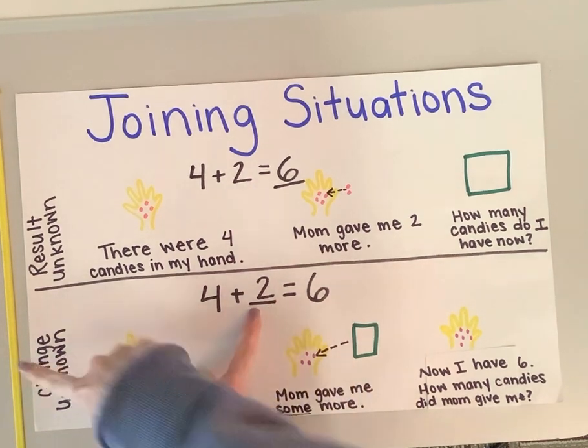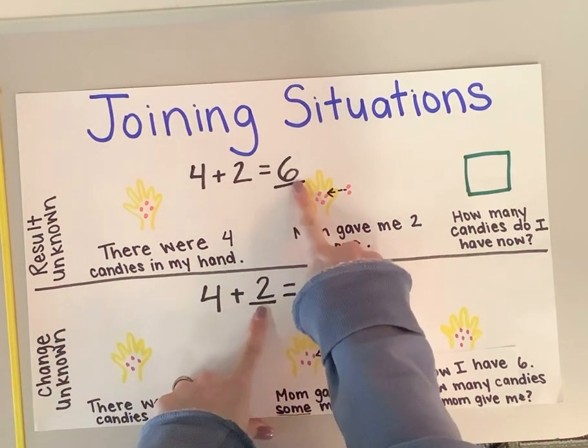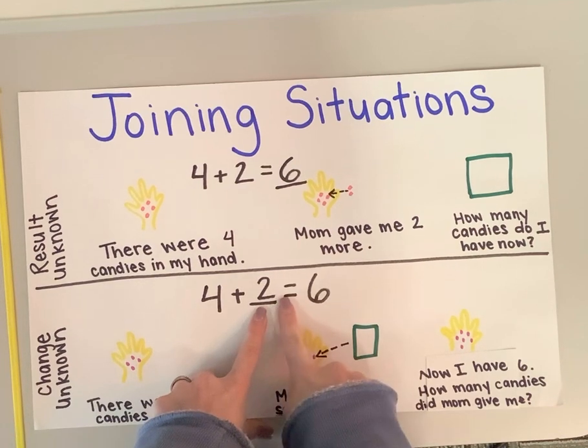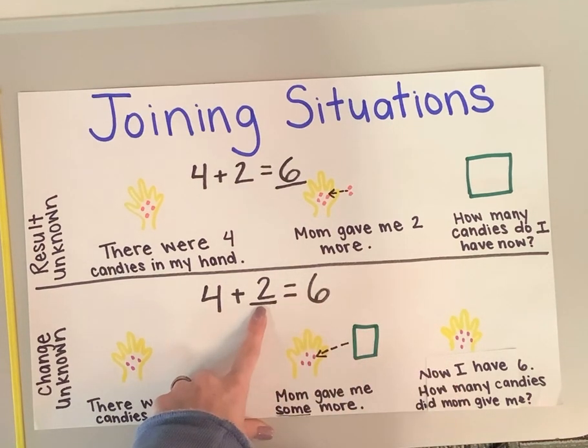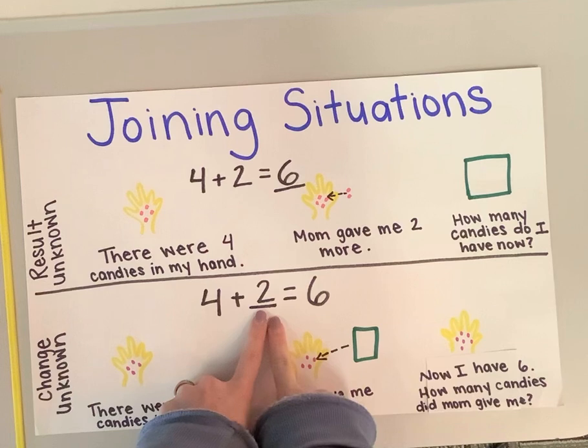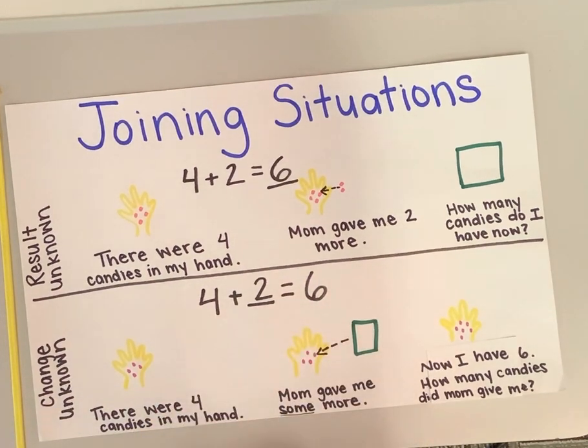I have to figure out the change. Instead of figuring out the result, I'm thinking about how many she added. Four plus an amount equals six. We know that that's two.